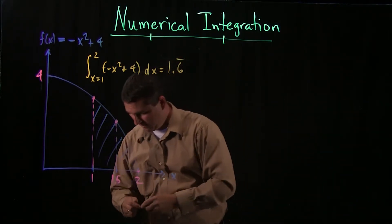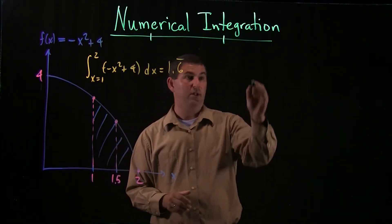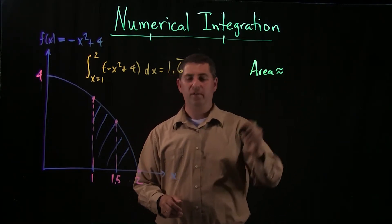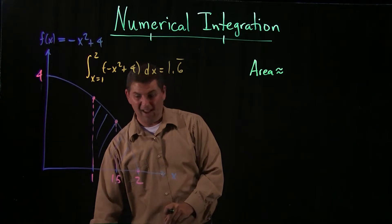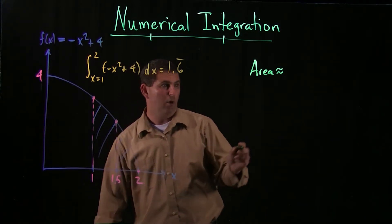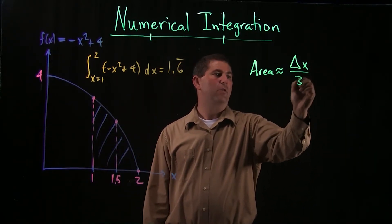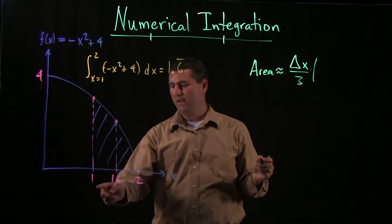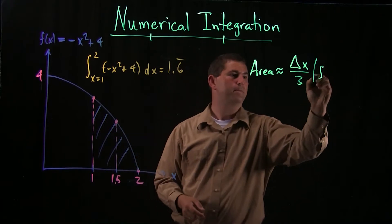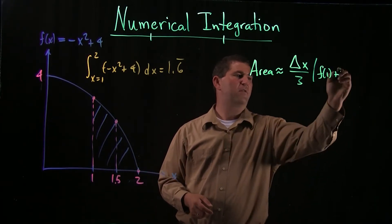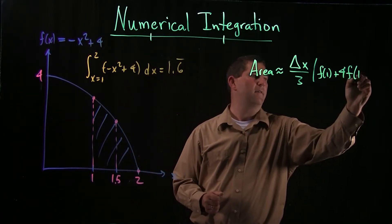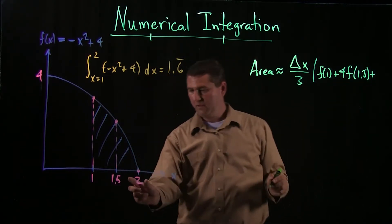So the Simpson's rule for just one parabola is very easy. The area should be approximately, I need my delta x. So let's write the formula down. Delta x over 3 and then we need our y0. Well, what's a y0? It's f of 1 plus 4 times f of this term, 1.5, plus f of 2. So we just need to know these values.